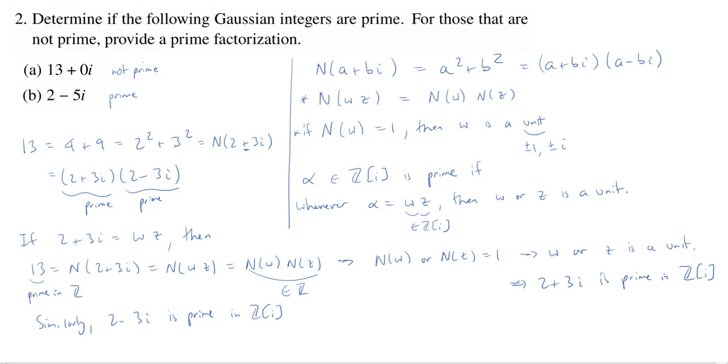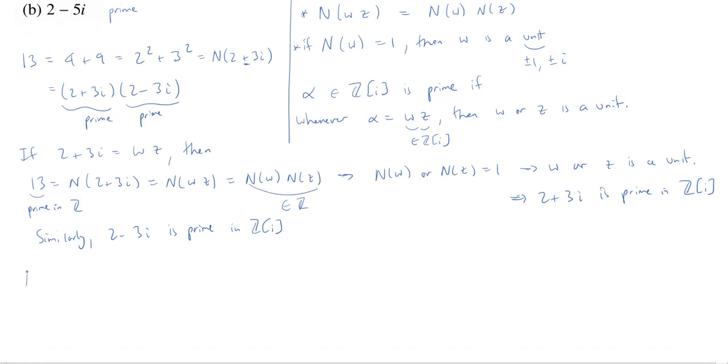How about 2 minus 5i? Well, if I take the norm of 2 minus 5i, I get 29, which is 2 squared plus 5 squared. But 29 is prime in the integers.